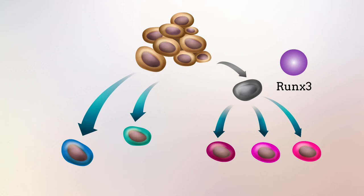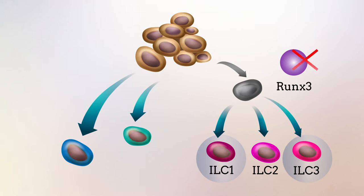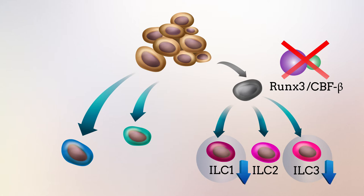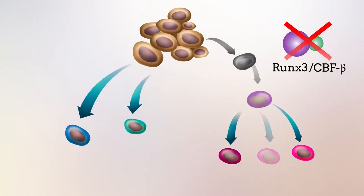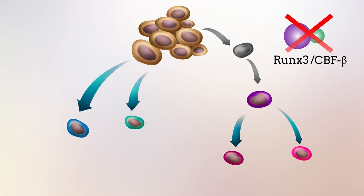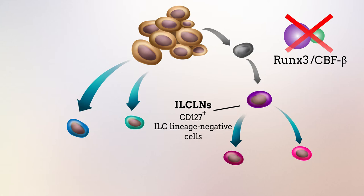They found that RUNX3 is expressed in both ILC1 and ILC3 cells, but not ILC2 cells. Furthermore, eliminating the expression of RUNX3 and its cofactor CBF-beta in ILCs and their precursors led to lower numbers of ILC3 and ILC1 cells. At the same time, there was an accumulation of a previously undescribed precursor cell type, referred to as ILCLNs, for CD127-positive ILC lineage negative cells, suggesting that the cells stalled in their development at this stage.